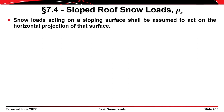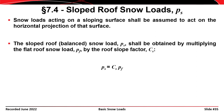The last topic in this presentation is sloped roof snow loads, P sub S. After determining P sub G and the coefficients C sub E, C sub T, and I sub S to get the flat roof snow load, if the roof is sloped we modify P sub F to get the sloped roof snow load. Importantly, the snow load acts on a horizontal projection of the surface. The sloped roof snow load is P sub S equals C sub S times P sub F, where C sub S is the roof slope factor determined from one of three different charts.